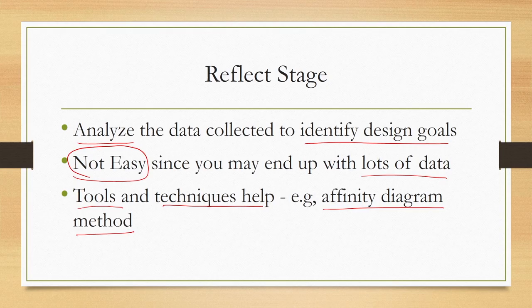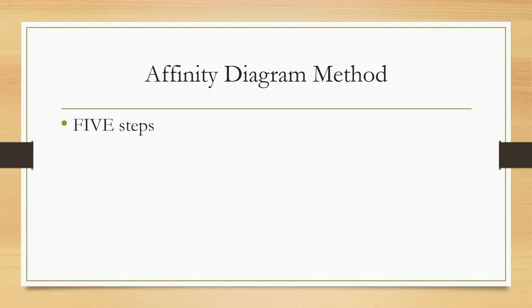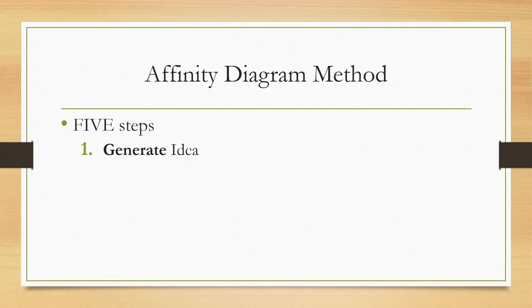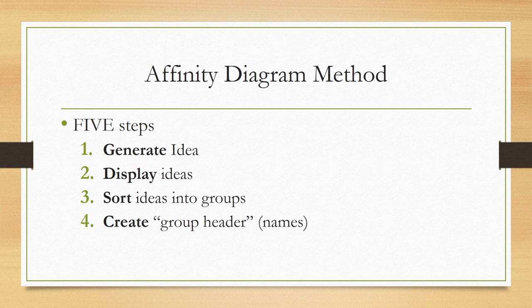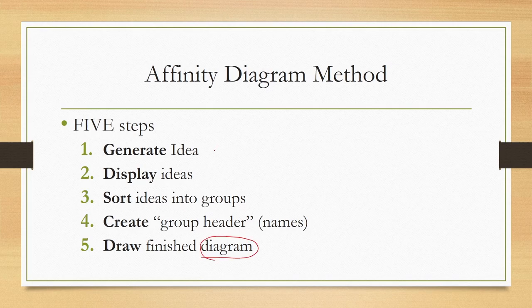We can make use of tools and techniques to analyze the data and find design goals. One such technique is the affinity diagram method. This method contains five steps: generate ideas, display ideas, sort ideas into groups, create group headers — that is, create names for each group — and finally draw the finished affinity diagram.